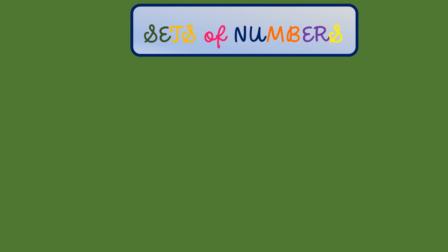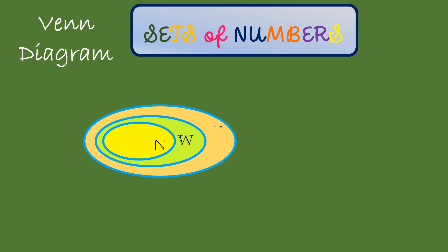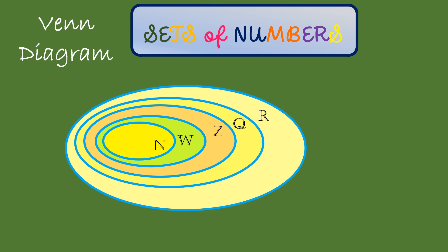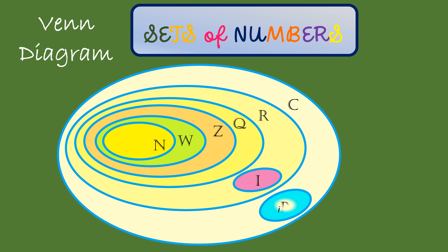This is the Venn diagram of the set of numbers. We have the natural numbers, the whole numbers, the integers, the rational numbers, the real numbers, the irrational numbers, the imaginary numbers, and the complex numbers. So this is the Venn diagram of the sets of numbers.